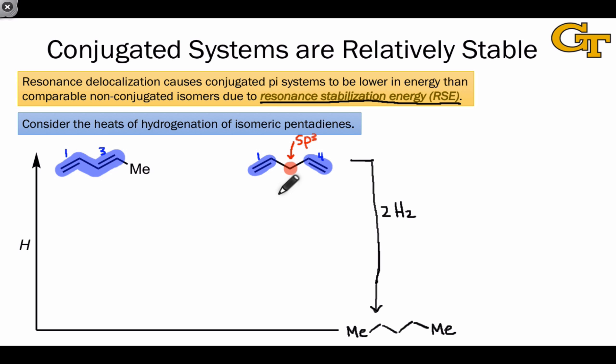If we measure the enthalpy change for this process for the 1,4-pentadiene molecule, we observe an exothermic reaction with an enthalpy change of about negative 60.7 kcal per mole. If we make the same measurement for the 1,3-pentadiene molecule, we again observe an exothermic reaction, but now the enthalpy change is only negative 57.1 kcal per mole.